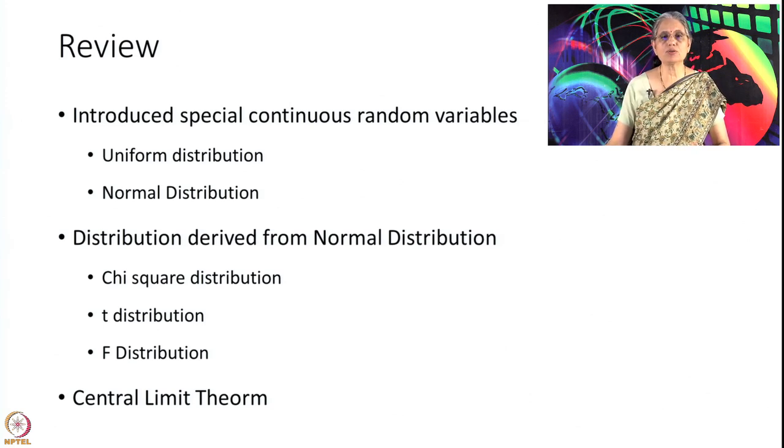Primarily because the central limit theorem states that with the condition of finite variance, a large number of independent random variables coming from an identical distribution — if you take their mean value, as n tends to infinity the average value of the random variable follows a normal variable. More precisely, the average minus the mean divided by its standard deviation follows a standard normal variable.